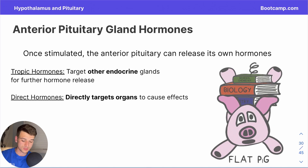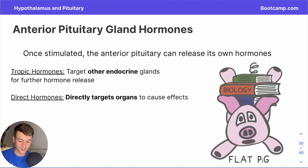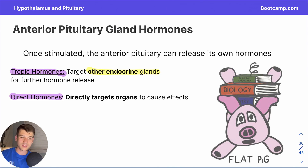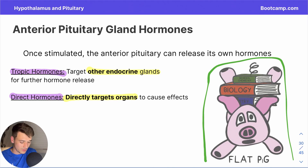We've completed phase one for the anterior pituitary — the hypothalamus released its hormones, they reached the anterior pituitary, and stimulated release of its own hormones. There are actually two kinds of hormones produced by the anterior pituitary. Tropic hormones target other endocrine glands with the goal of promoting further hormone release. Direct hormones, by contrast, go right to the organs and cause effects themselves. Keep in mind the mnemonic flat pig — it'll make a lot more sense shortly.